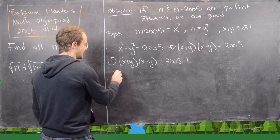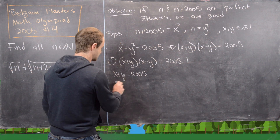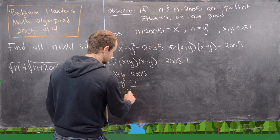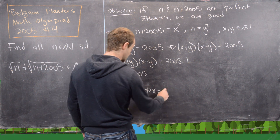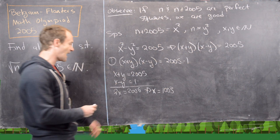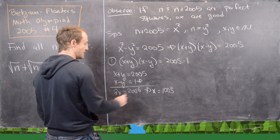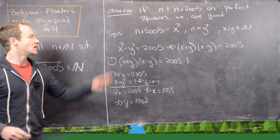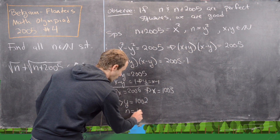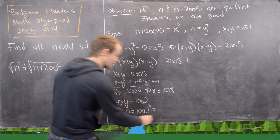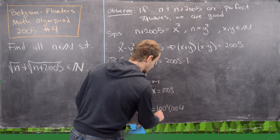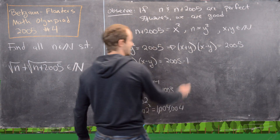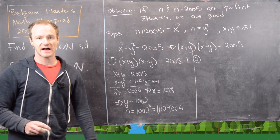Setting x + y = 2005 and x - y = 1, adding those equations gives 2x = 2006, so x = 1003. Then y = x - 1 = 1002, which makes n = 1002² = 1,004,004. That's our first n value that makes the expression a natural number.